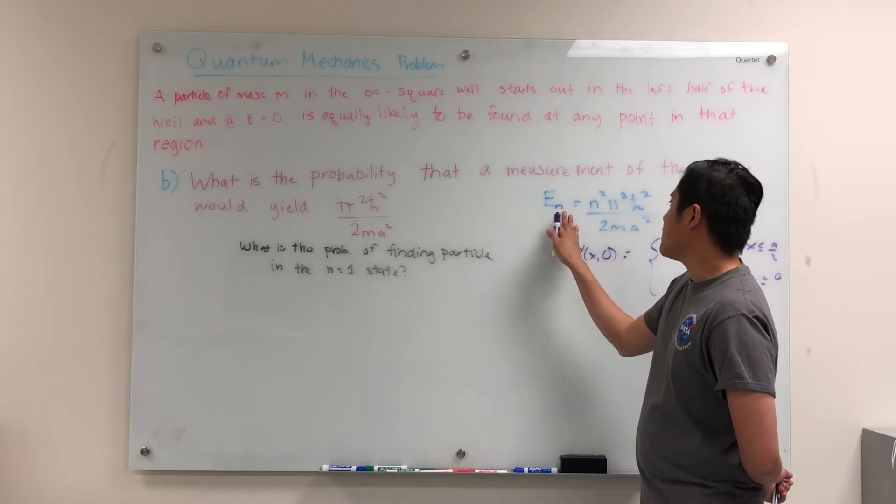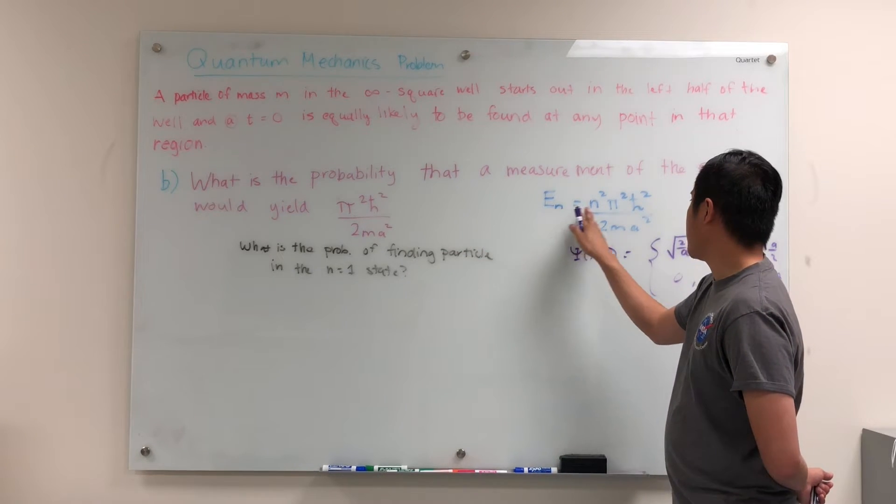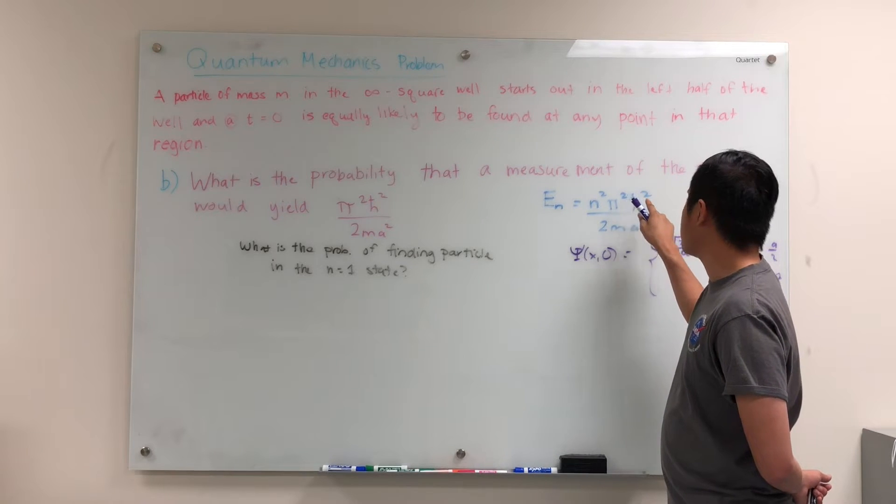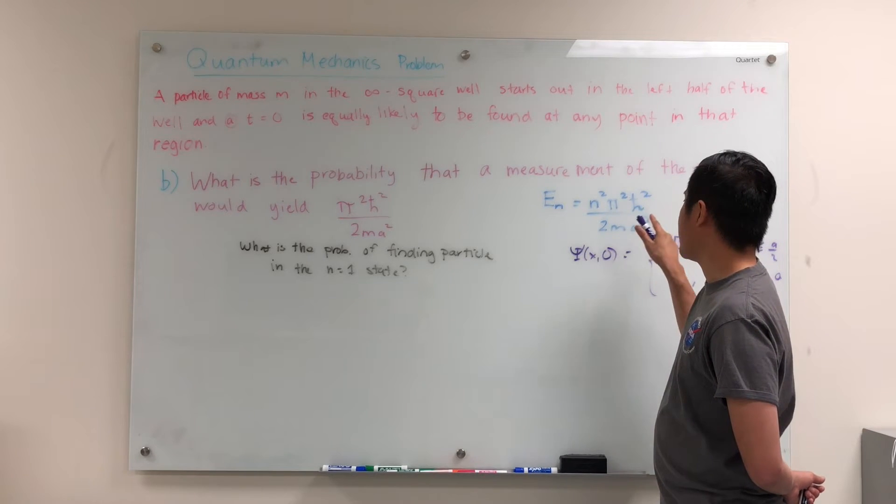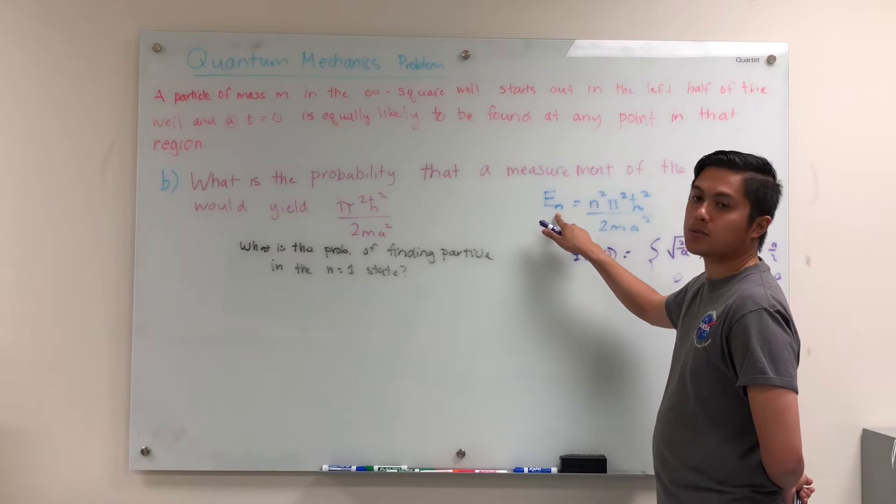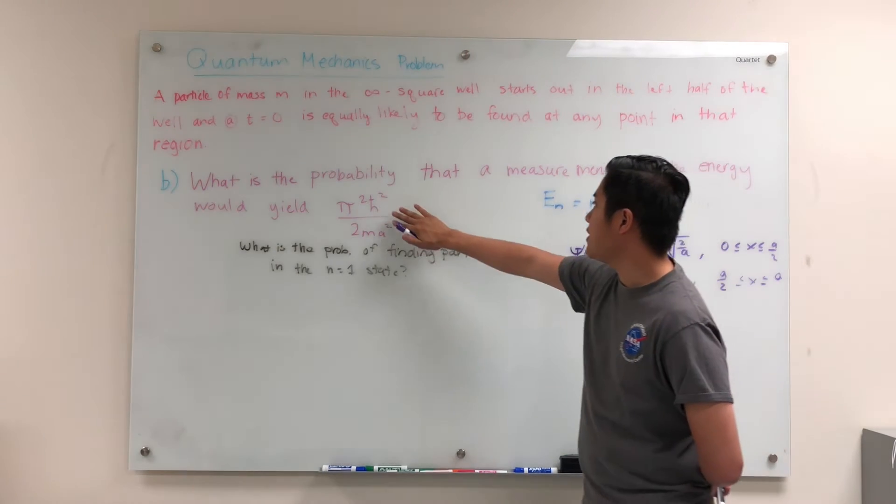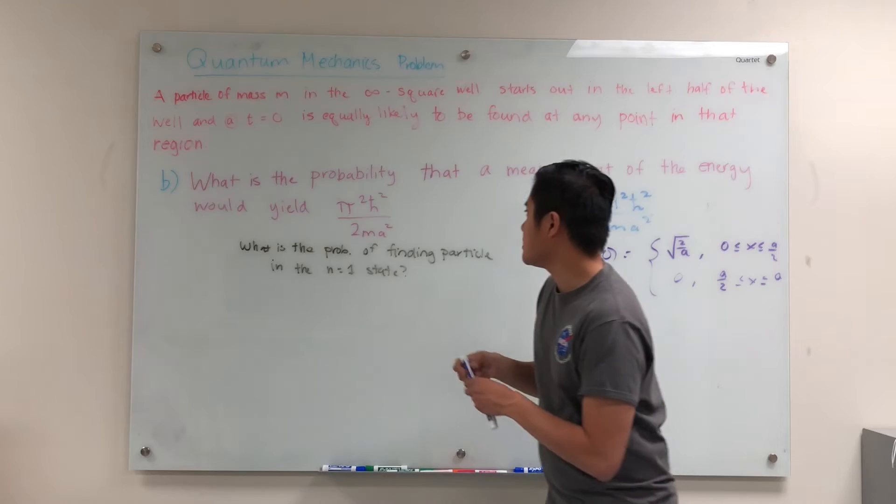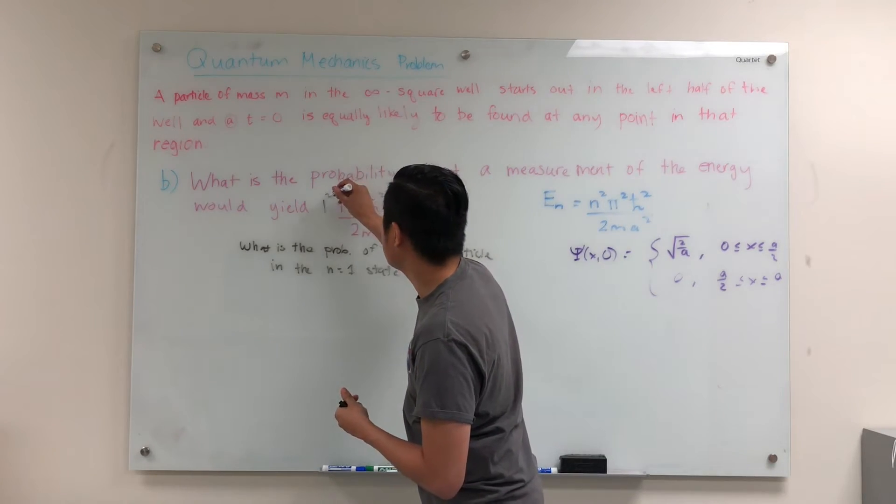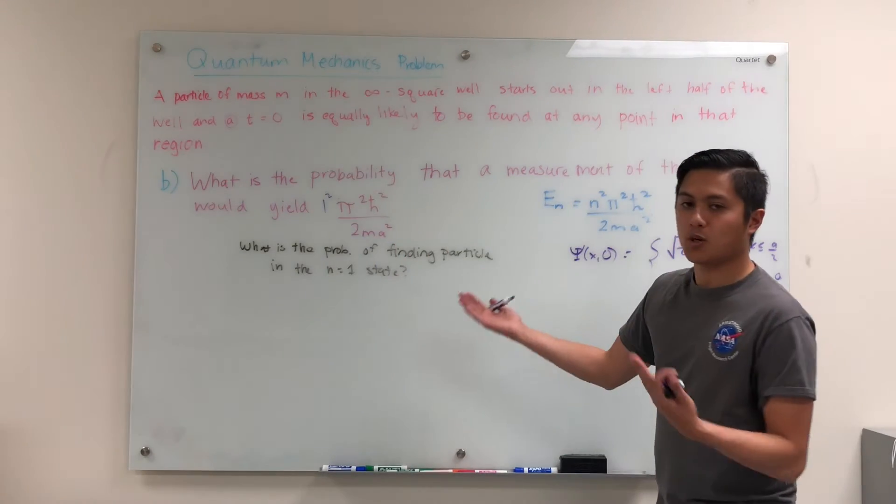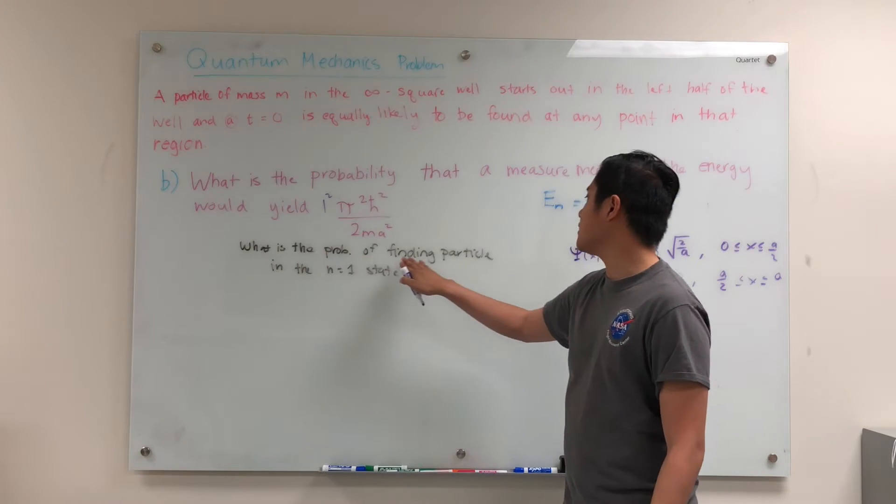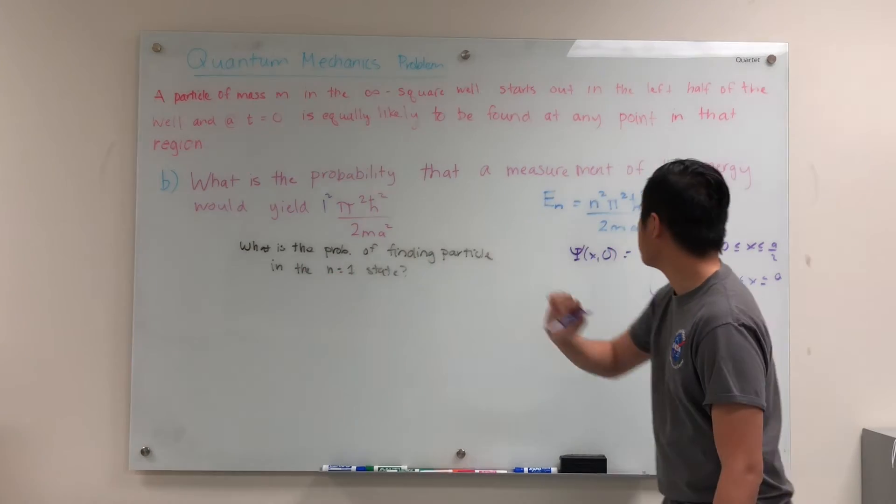Now, the energy levels in the infinite square well are given by n squared pi squared times h-bar squared over 2ma squared. So n corresponds to the energy level. If you look at this term right here, there is a 1 squared there. So this is equivalent of asking, what is the probability of finding the particle in the n equals 1 state?